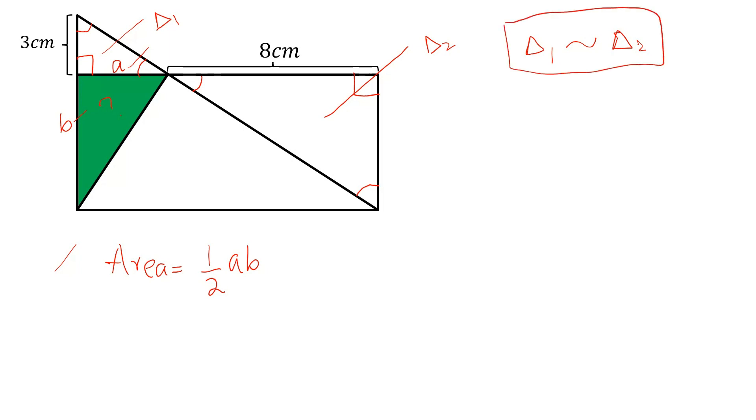If these are similar, we can write A divided by 3, A divided by 3 is equal to, if this side is B, then this will be also B.